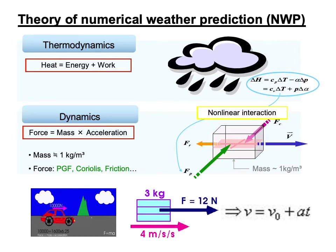The principle of numerical weather prediction is based on fundamental theories of thermodynamics and dynamics. When clouds form, heat releases. This heating increases the temperature of the air and also expands its volume. Dynamics is based on Newton's second law: force equals mass multiplied by acceleration. The mass of air is approximately 1 kg per cubic meter. It is heavy and we don't feel it since our bodies are used to this mass, just like fish feel free in water, whose mass is 1 ton per cubic meter.